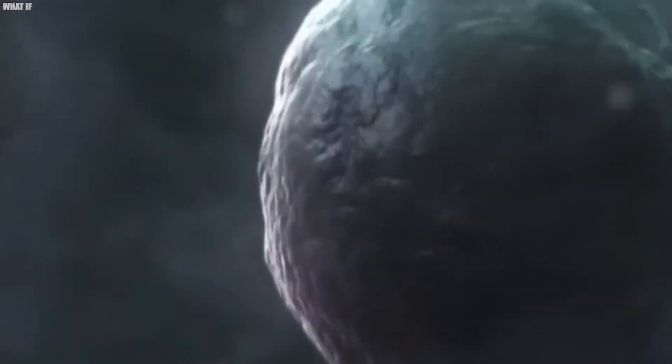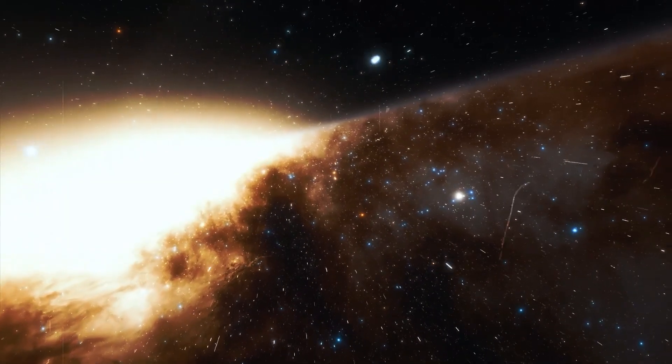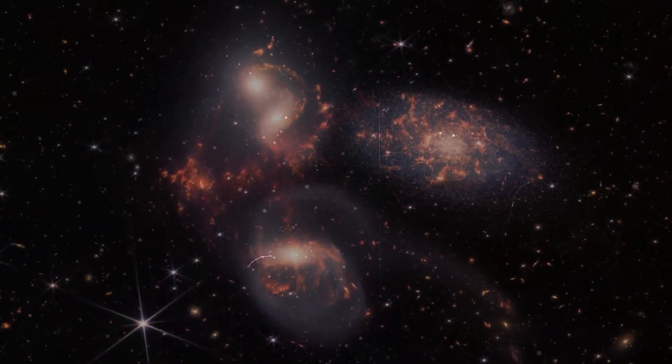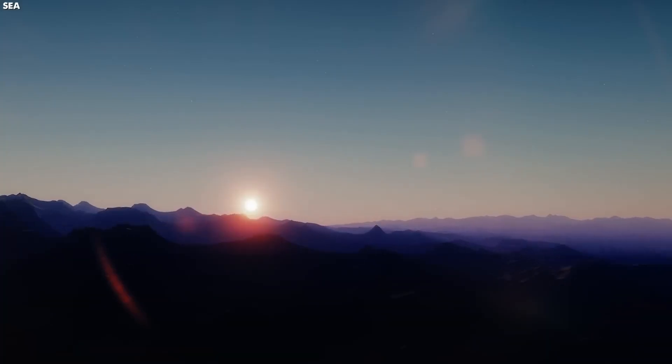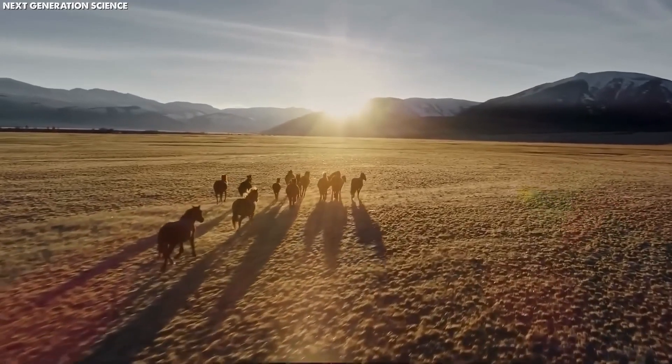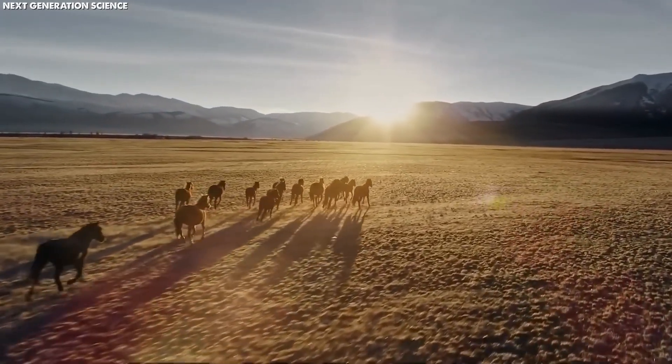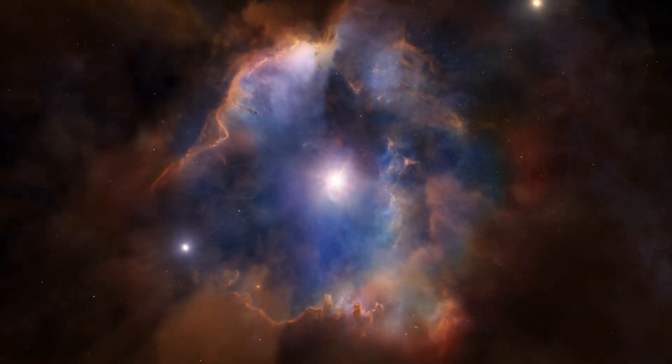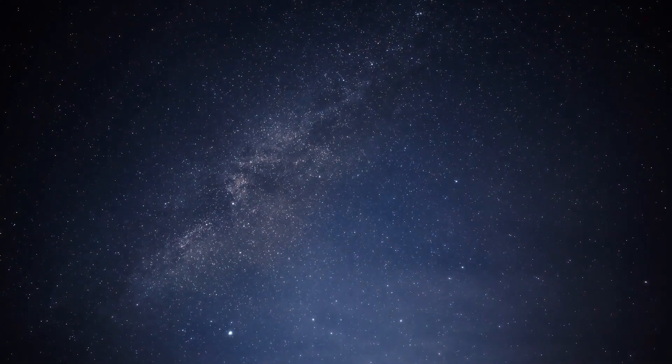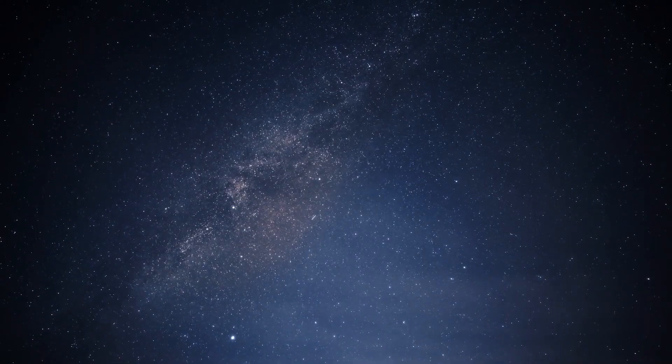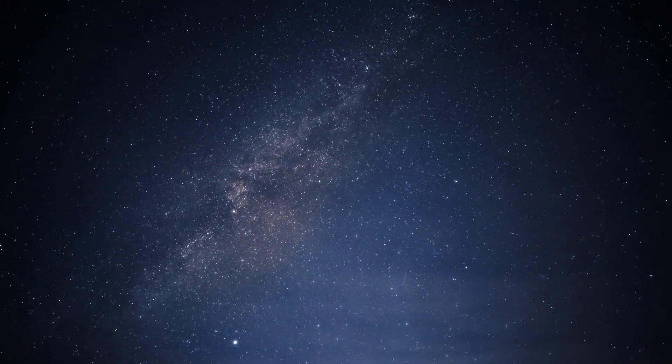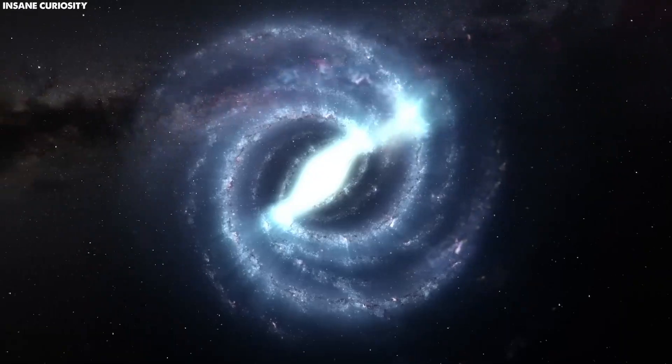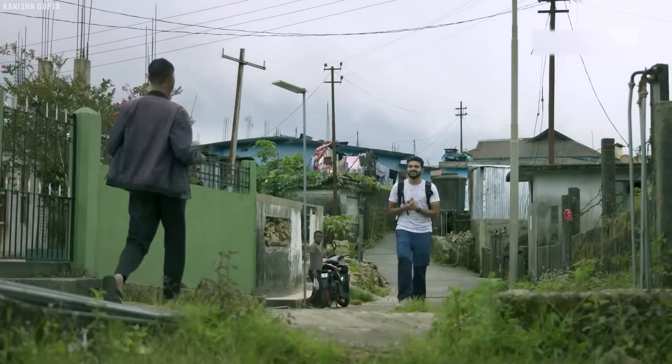This galactic mashup could also bring more radiation our way. As the black holes at the centers of the Milky Way and Andromeda do their thing, they might send out waves of energy that could mess with Earth's atmosphere. We might have to get creative to protect ourselves from this new cosmic weather. While it's exciting to think about our galaxies getting closer, scientists have more to study and understand about what might happen. It's like planning for a big party. They need to know what to expect so they can be ready for any surprises.